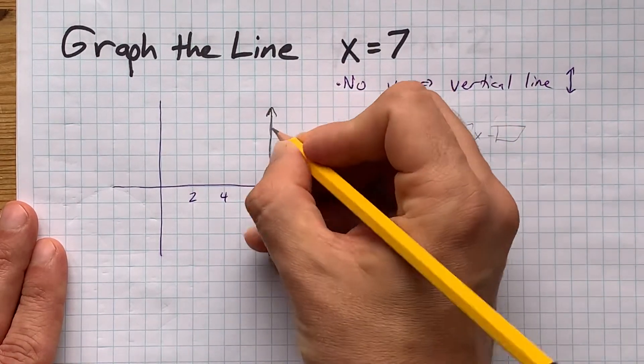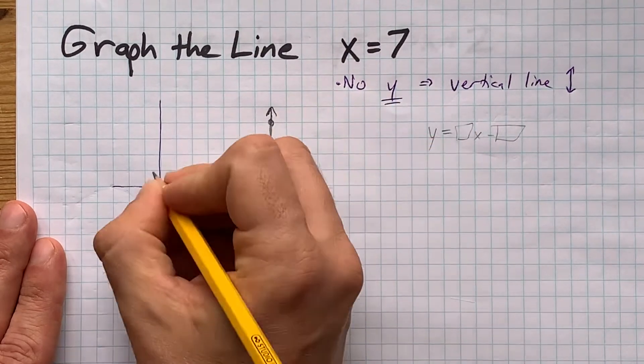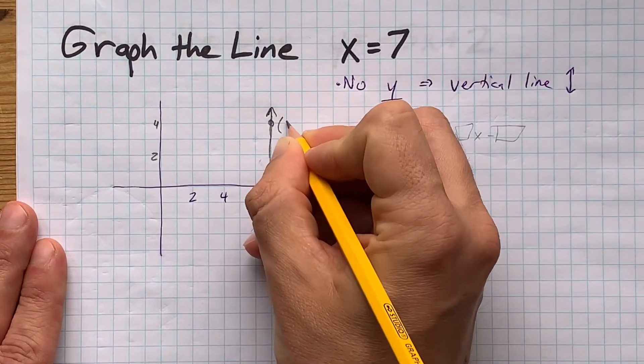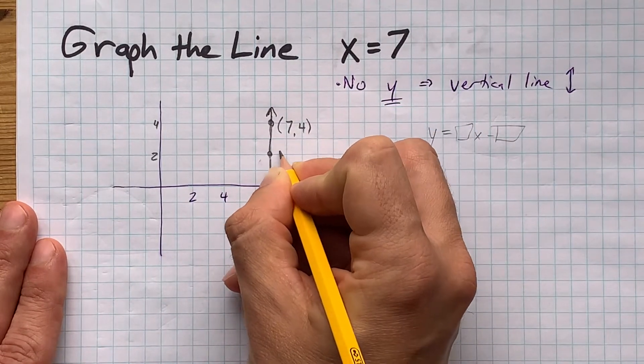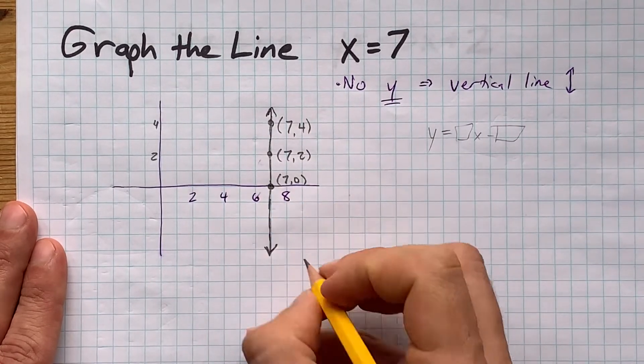But let's take a look at what points are actually part of this line. There's this point here. What are the coordinates of that point? Well, it's at 7 on the x-axis and 4 on the y-axis. This point here is at (7, 2). This point is (7, 1).